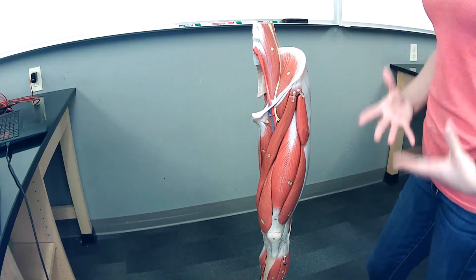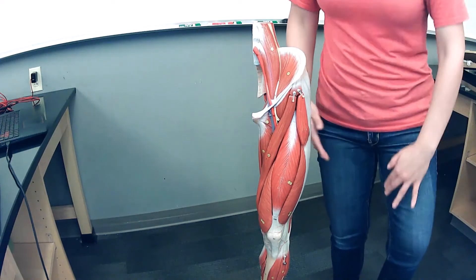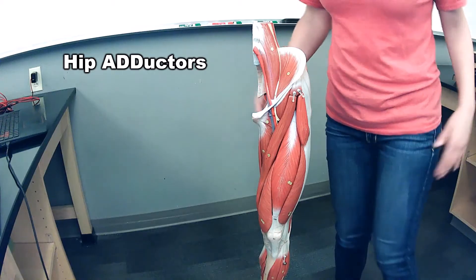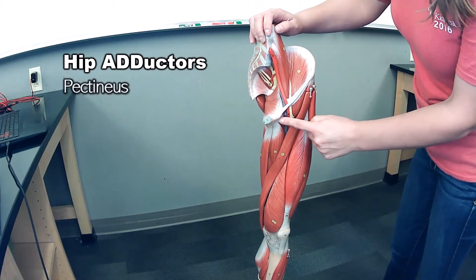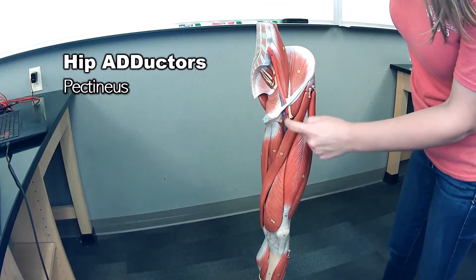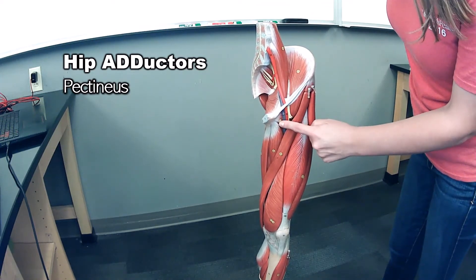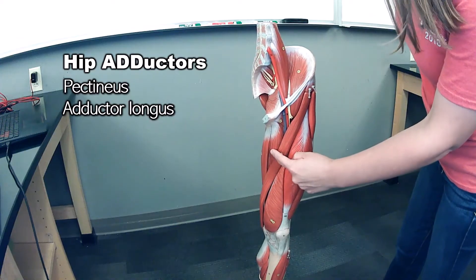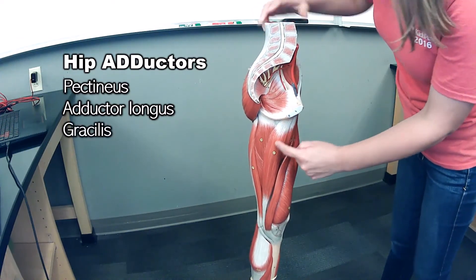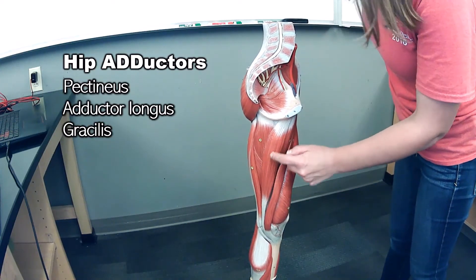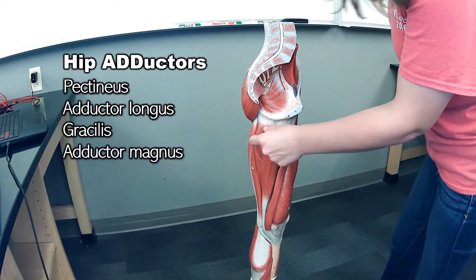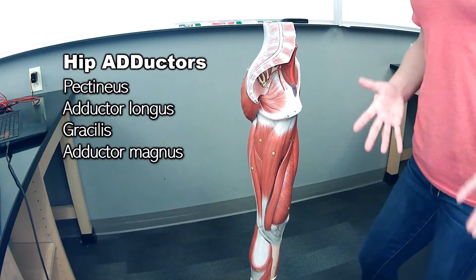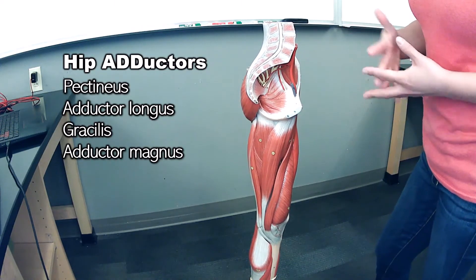If we start looking at the medial side of the leg, anything on the medial side is going to adduct. So that would be the pectineus, which we can only see a tiny piece of here, then adductor longus, the gracilis, and the adductor magnus. Those are the four adductors visible on this model. There's also an adductor brevis, but we can't see it here.